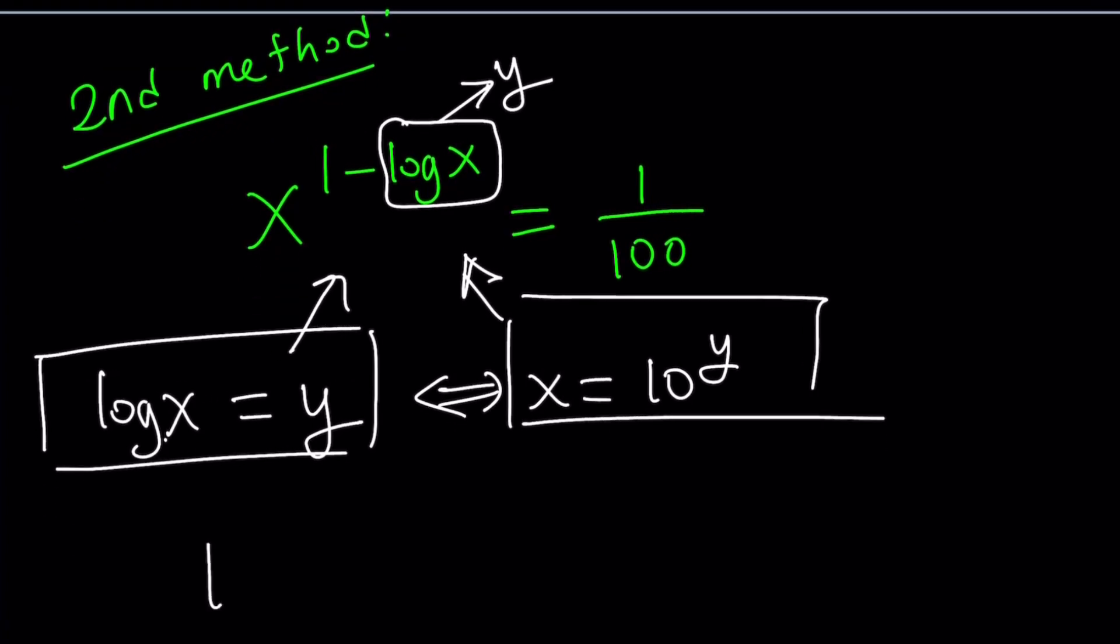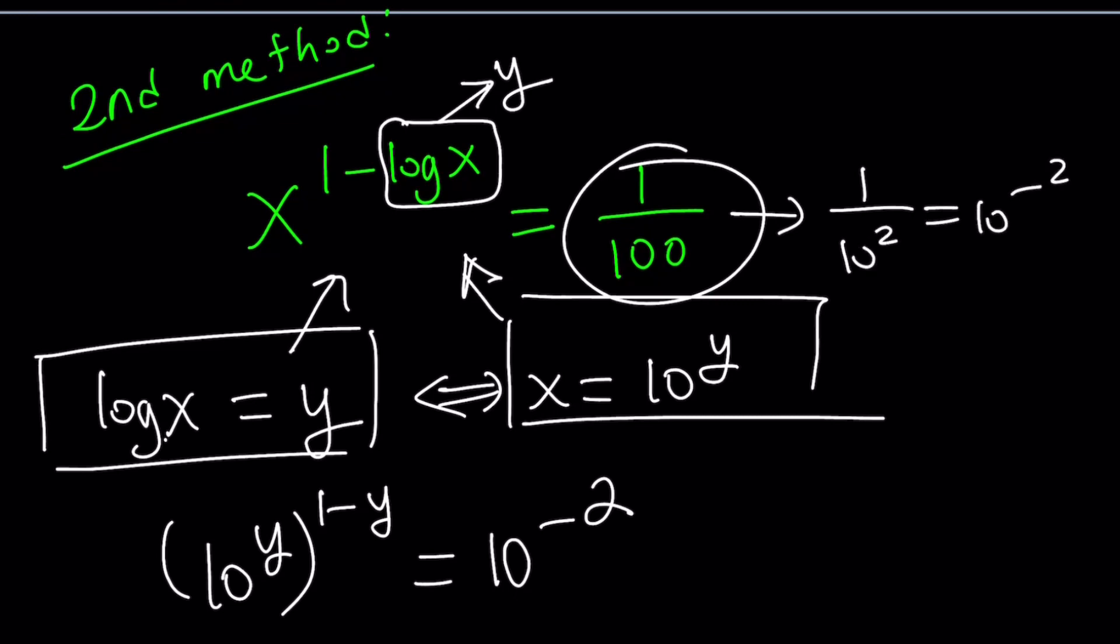So x will be replaced with 10 to the y, and log x would be replaced with y, so it's going to be 1 minus y. And we're going to have 10 to the power negative 2 on the right-hand side. I just wrote this as 10 to the power negative 2. As you know, this is 1 over 10 squared, and that is 10 to the power negative 2. So that's what negative exponents means. It doesn't mean the number is negative. It just means it's the reciprocal of some number with a positive exponent.